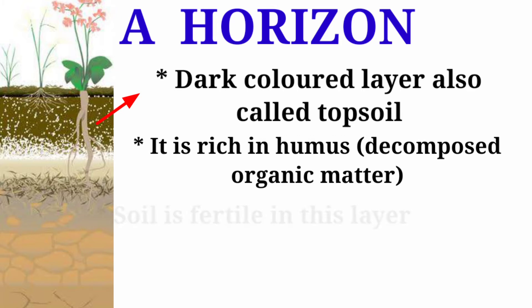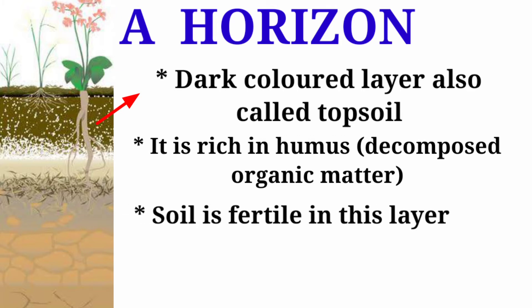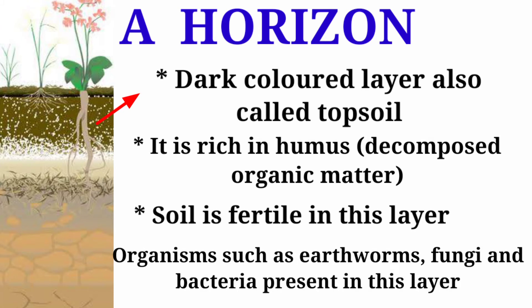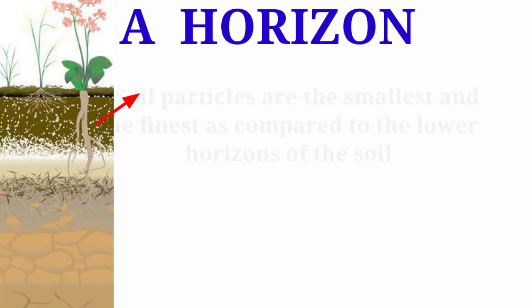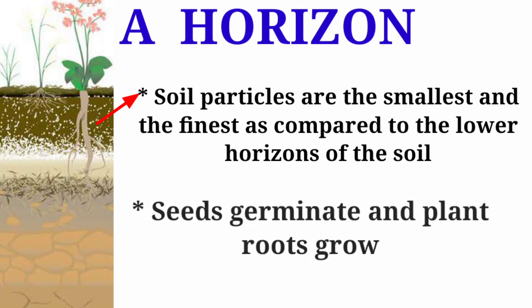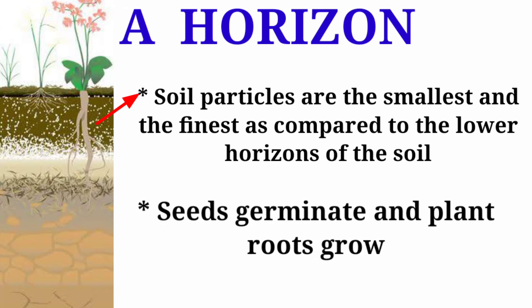Humus makes the soil more fertile, and many organisms such as earthworms and bacteria are present in this layer. The soil particles in this layer are the smallest and finest compared to the lower horizons. In this layer, seeds germinate and plant roots grow.